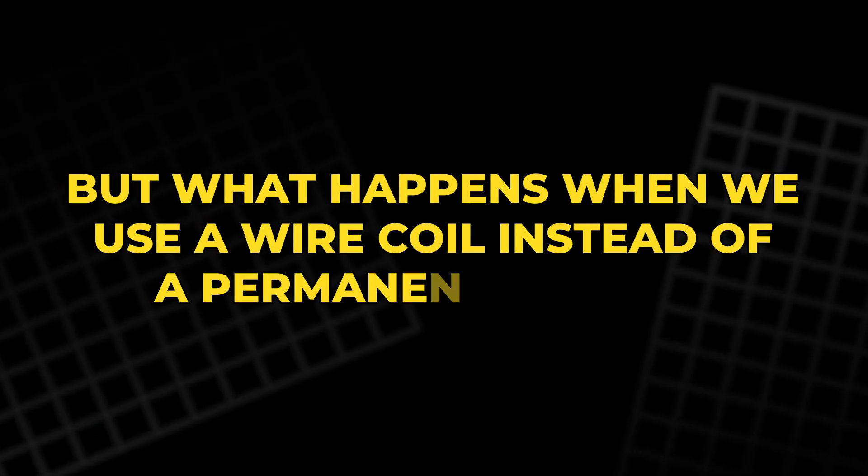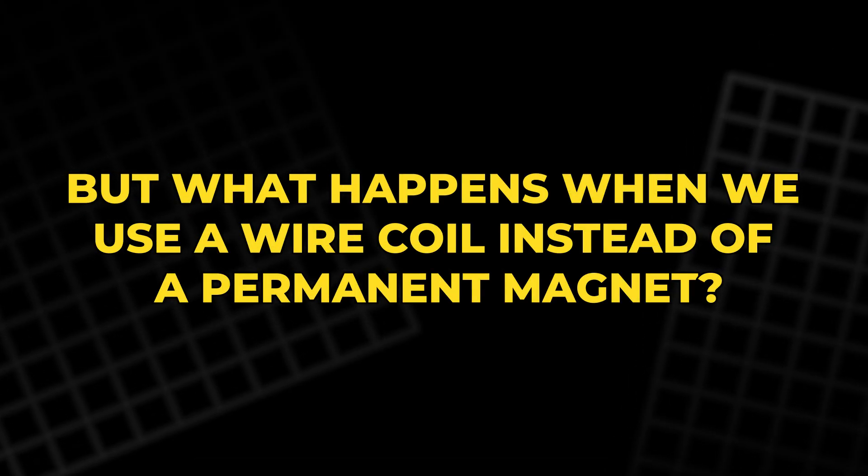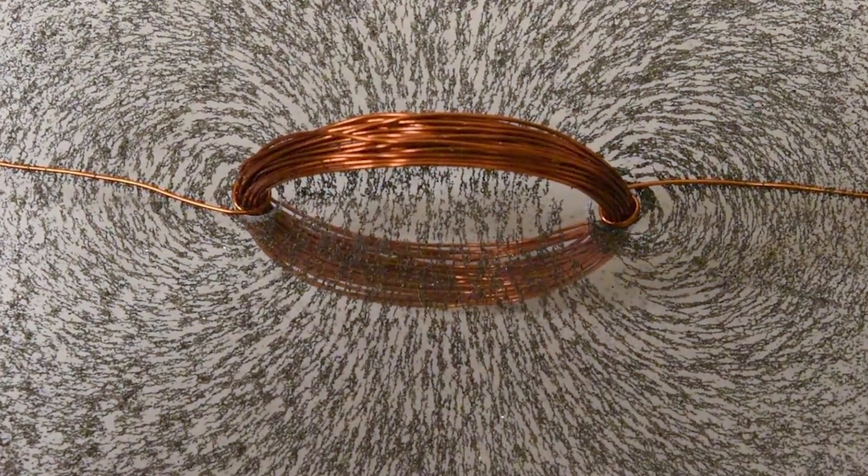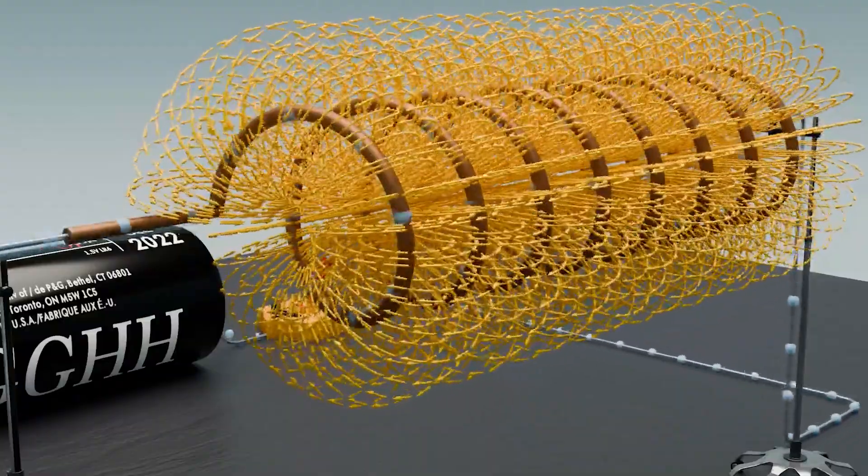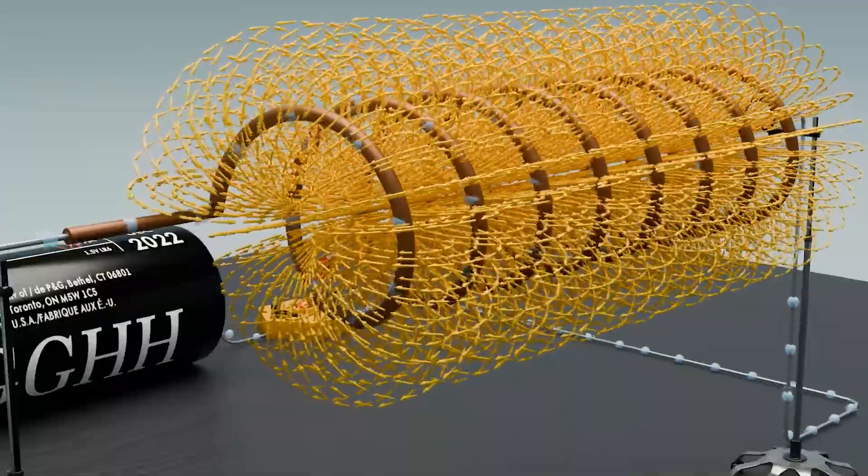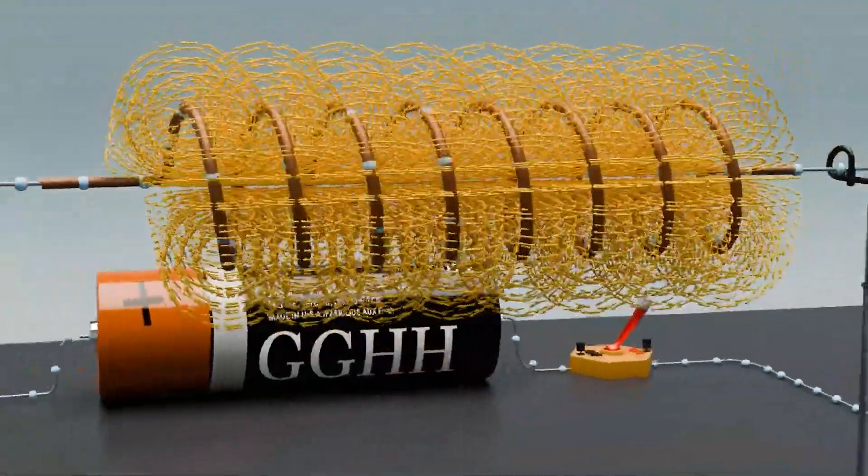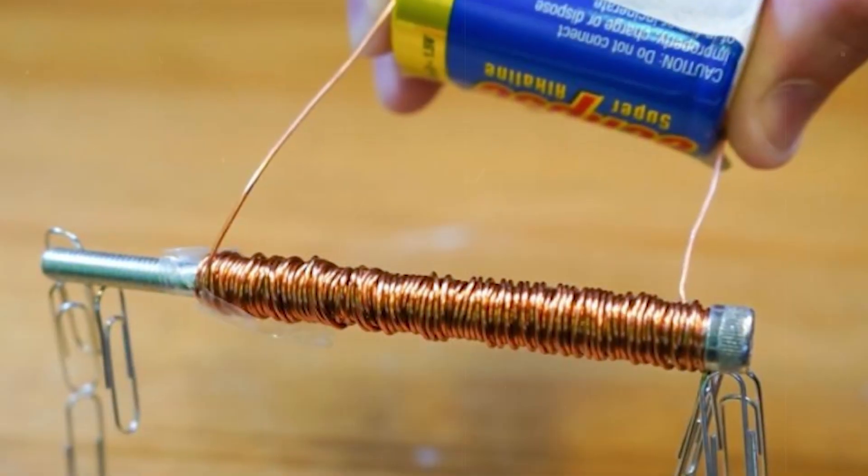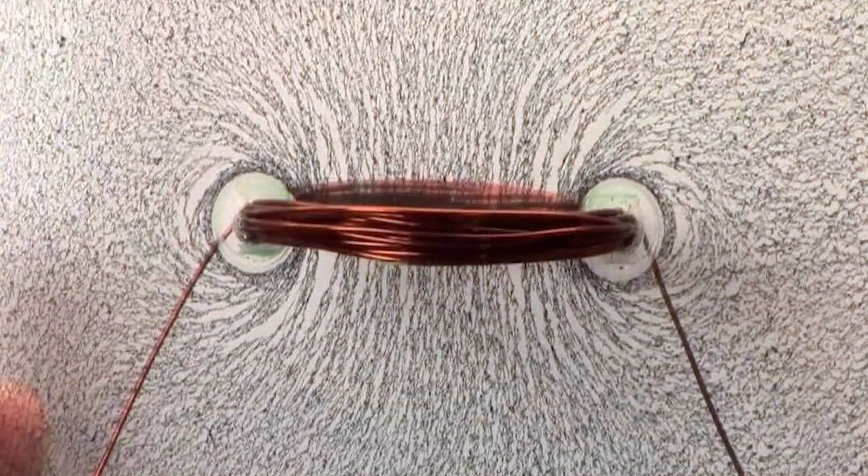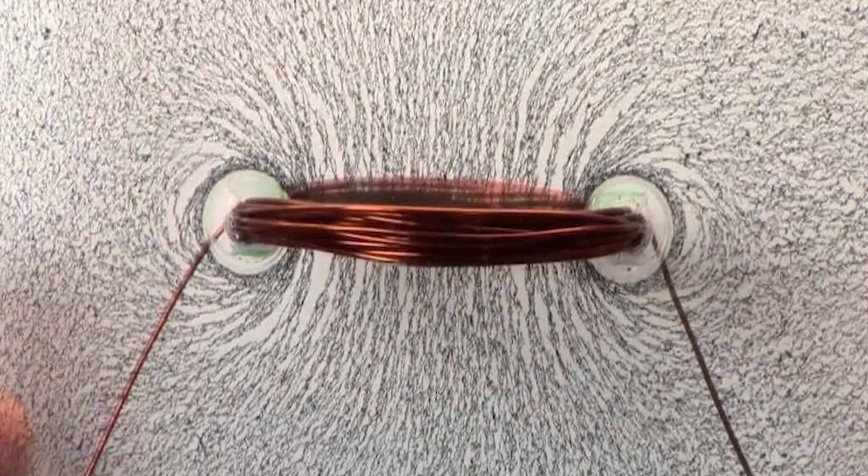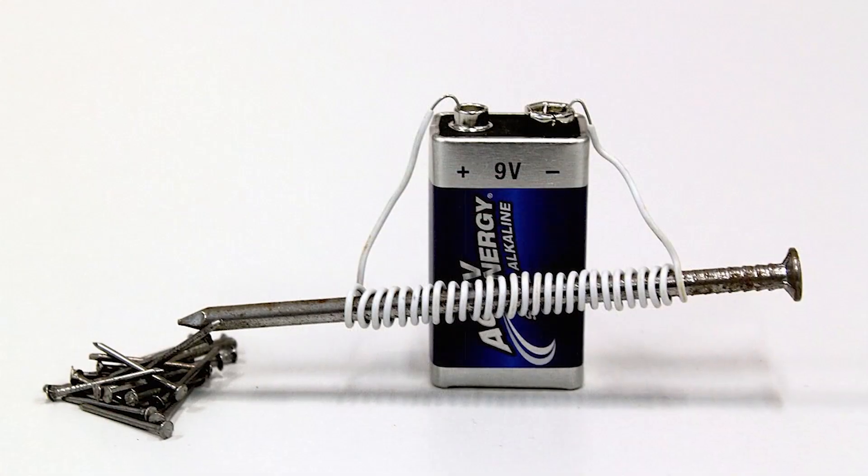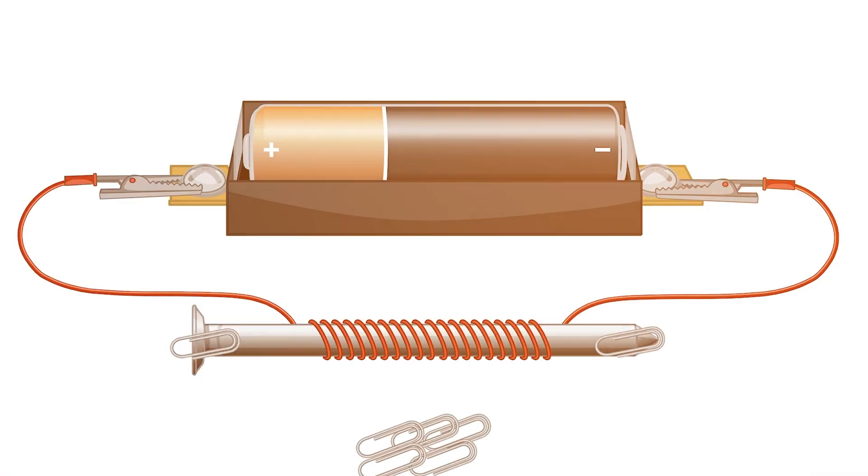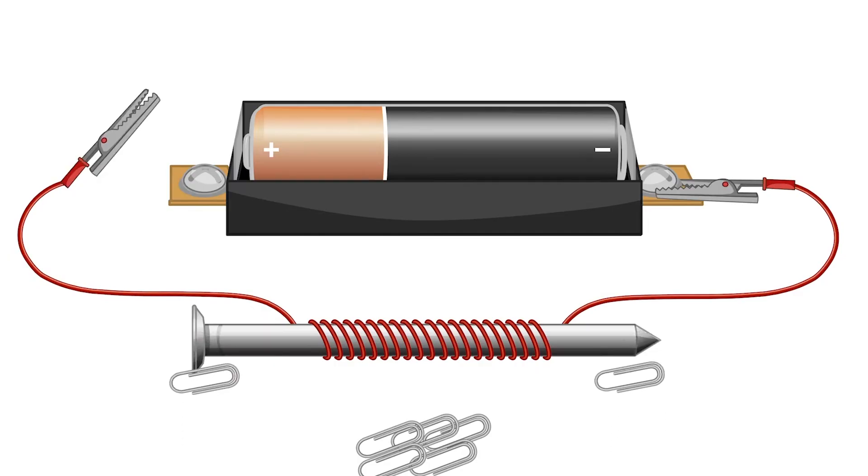But what happens when we use a wire coil instead of a permanent magnet? Here's where it gets interesting. When electricity flows through a coil of wire, it creates a magnetic field around it, turning the wire into an electromagnet. Now we've got a wire that can act like a magnet, and it can attract and repel other magnets.